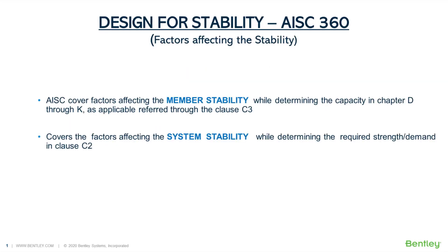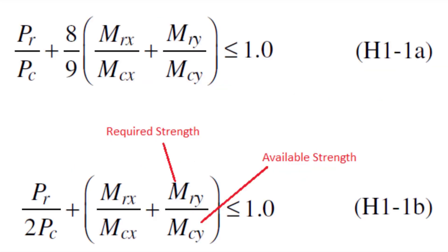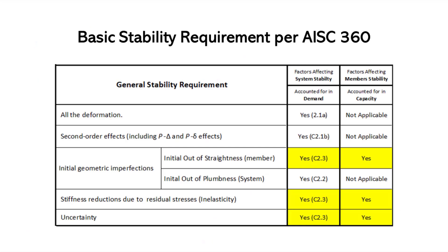Stiffness reduction due to partial yielding accentuated by the presence of residual stress must also be taken care of, along with uncertainty in system, member, or connection strength and stiffness. The design code handles all these concerns affecting member and system stability by determining the capacity and demand and then comparing and interacting them. So the factors affecting member stability and system stability are addressed through determining capacity and required strength.